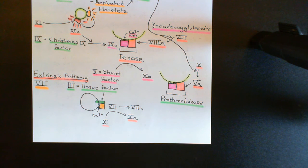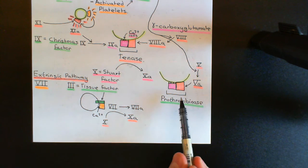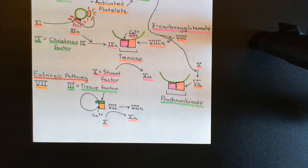Then prothrombin, with the help of calcium, will bind to activated platelet surfaces, and then will be activated by the prothrombinase to thrombin, and it will then start acting on fibrinogen molecules, converting them into fibrin monomers.